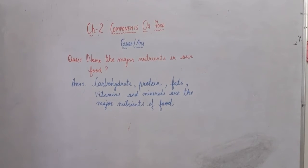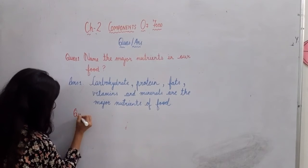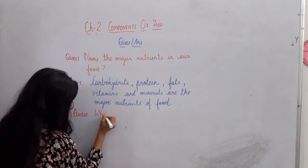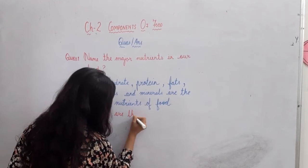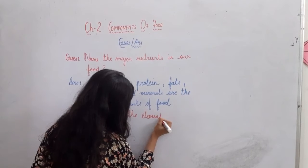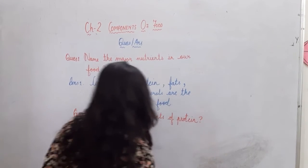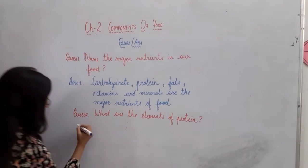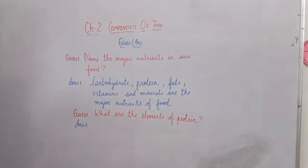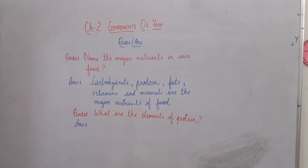Now write down question number 2. Question number 2. What are the elements of protein? Which means what elements are present in protein. Write it down. Protein is present carbon, hydrogen, oxygen and nitrogen. What are the elements? Carbon, hydrogen, oxygen, nitrogen.